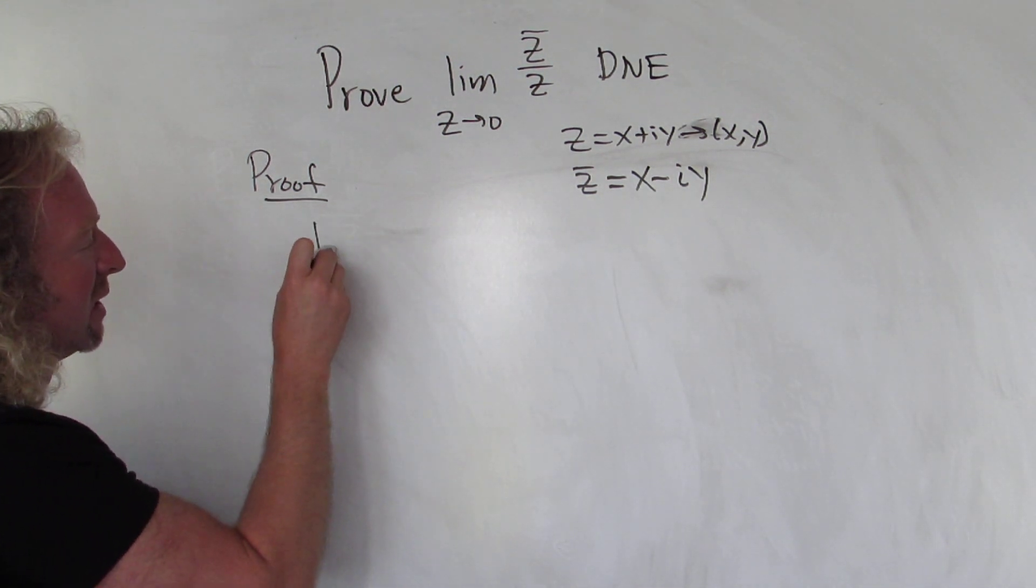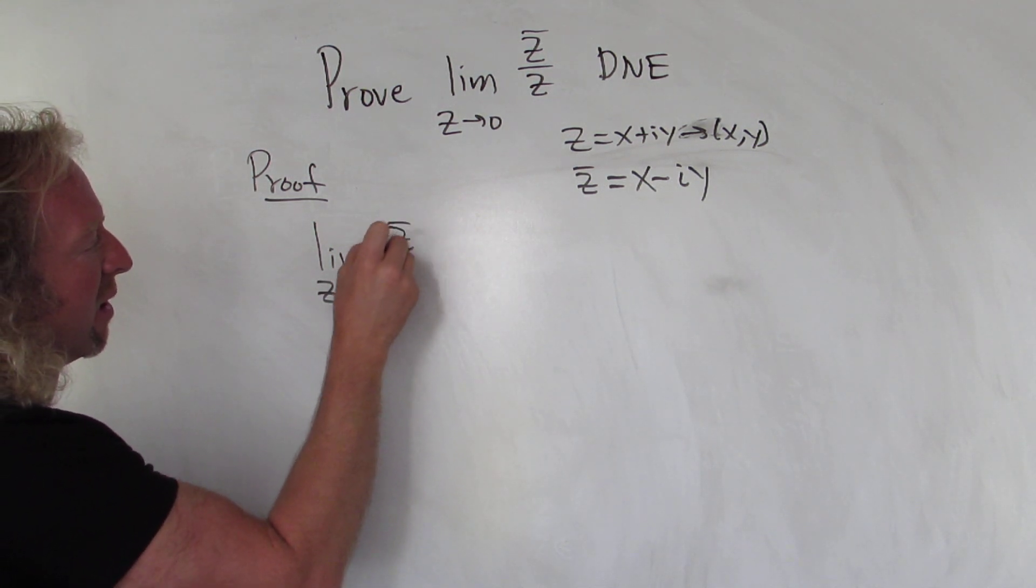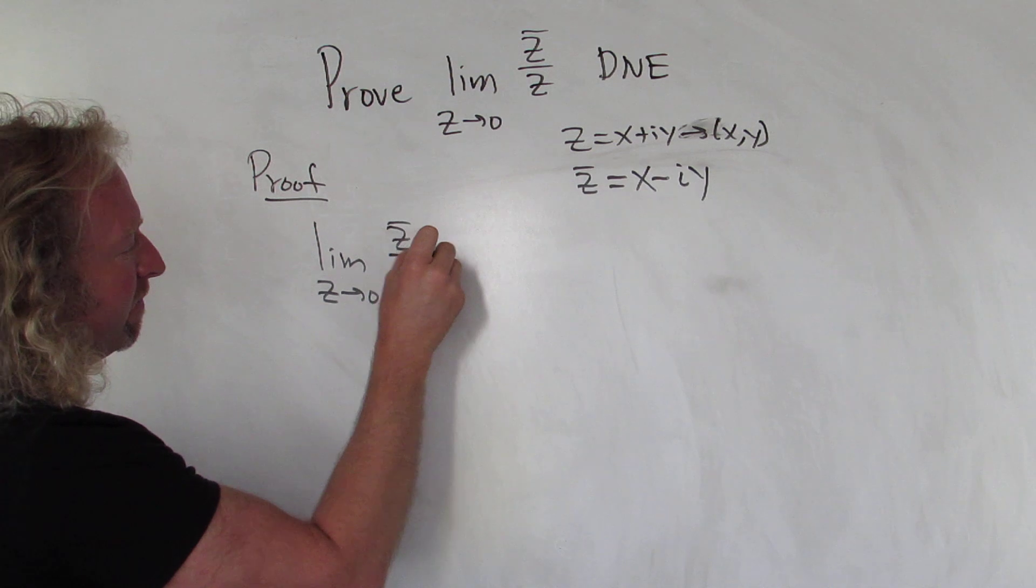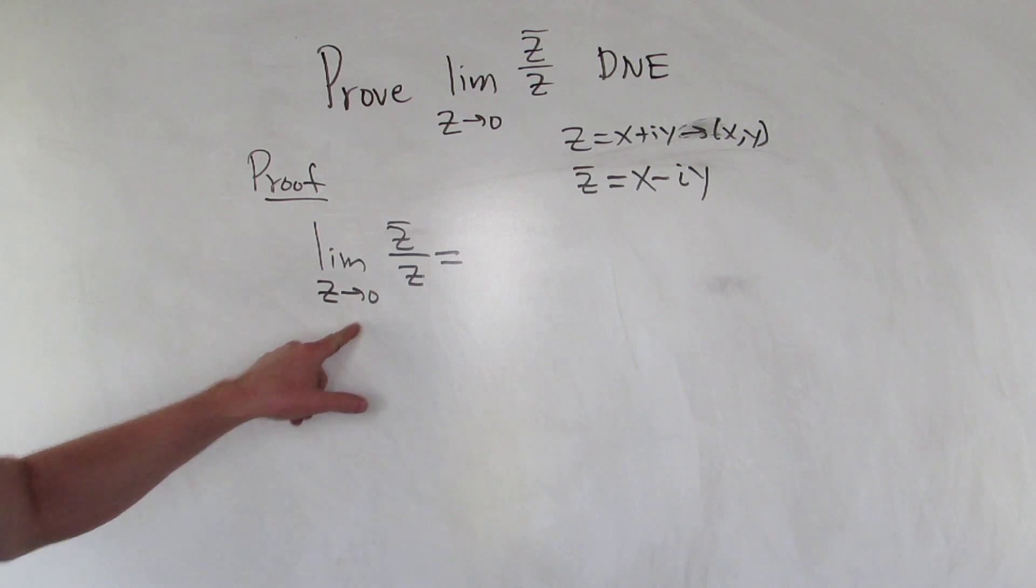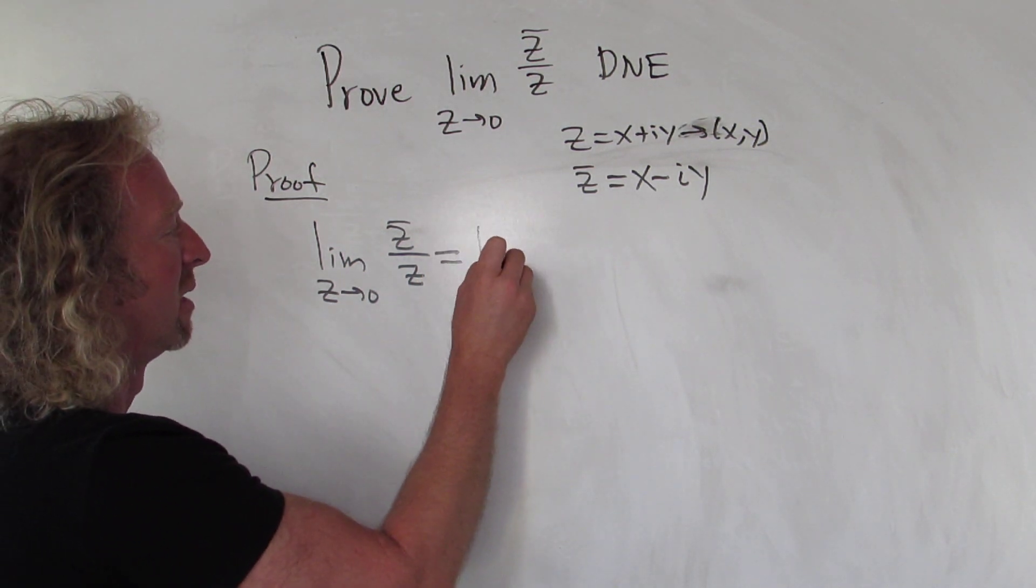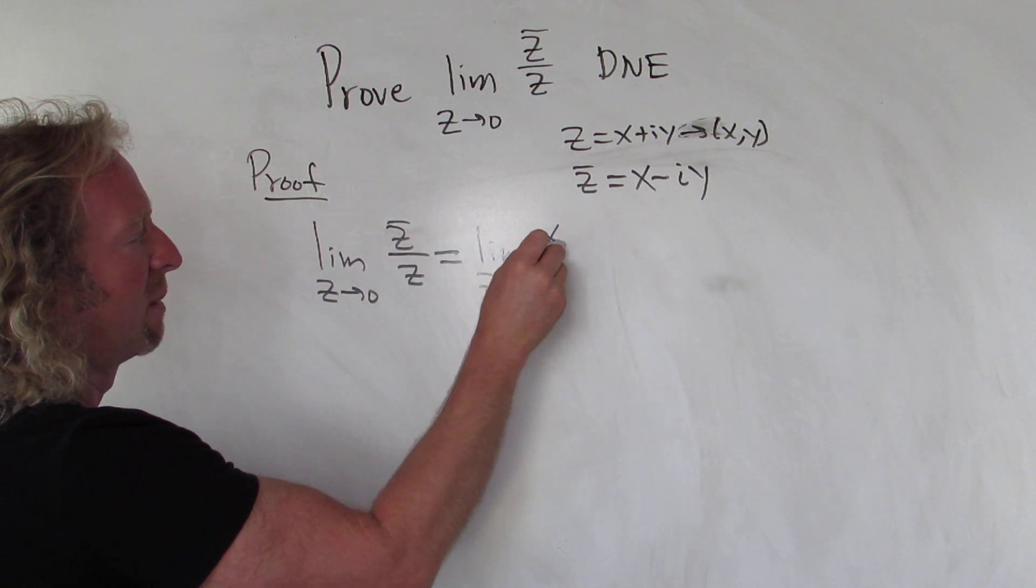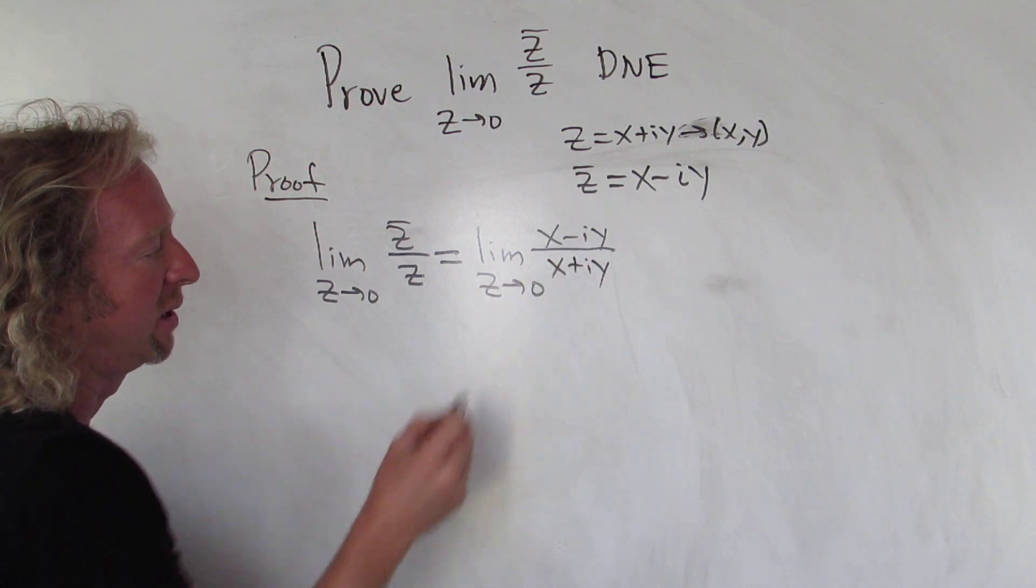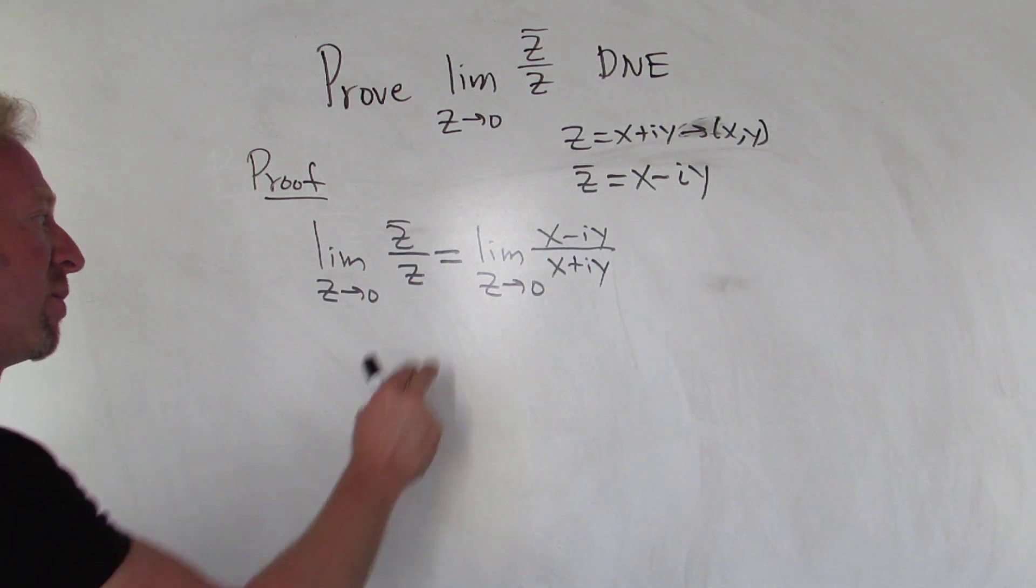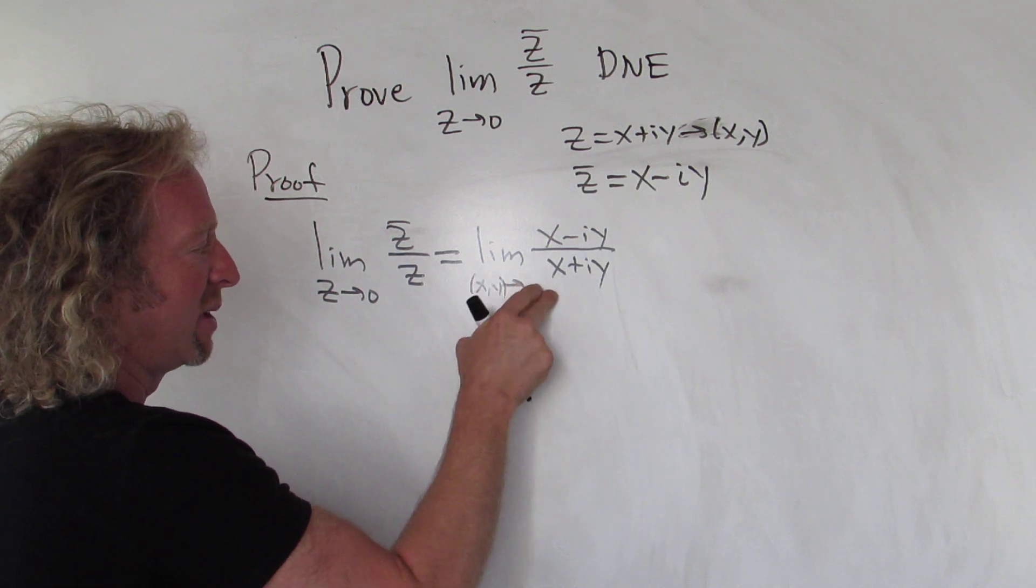All right, so let's go ahead and work this out. Let's take the limit as z approaches zero of z-bar over z. Now you can write this as the limit as z approaches zero, and this would be (x minus iy) over (x plus iy).